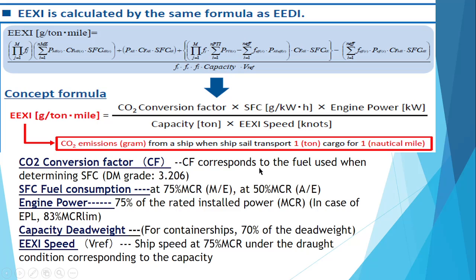The CO2 conversion factor depends on fuel type. For VLSFO or heavy fuel oil, the value is around 3.1–3.2; for diesel oil it is around 2.02–2.1. SFC is measured at 75% of MCR for the main engine and 50% MCR for the auxiliary engine. Engine power is measured at 75% of installed MCR power; in the case of EPL, it is 83% of MCR limitation. For capacity, containers use 70% of deadweight and passenger ships use gross tonnage. EEXI V reference speed is measured at 75% of MCR.